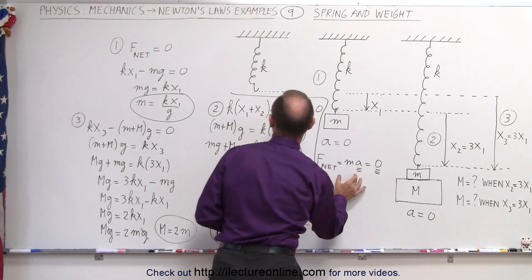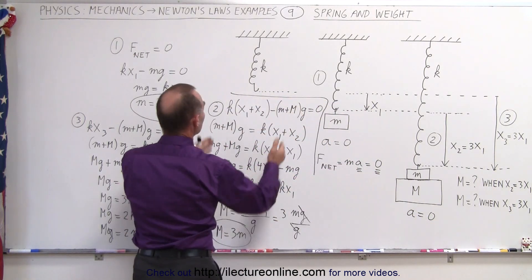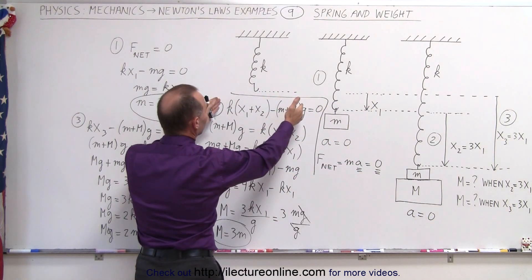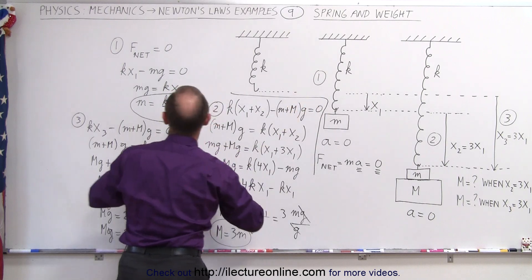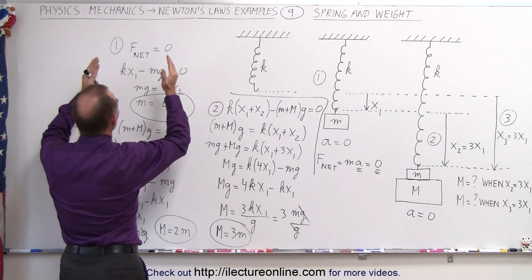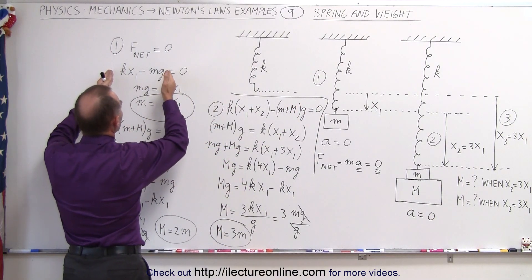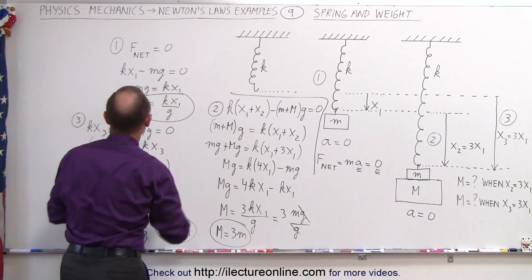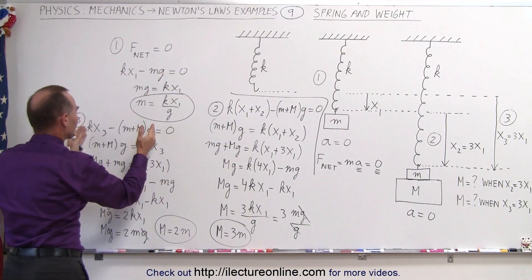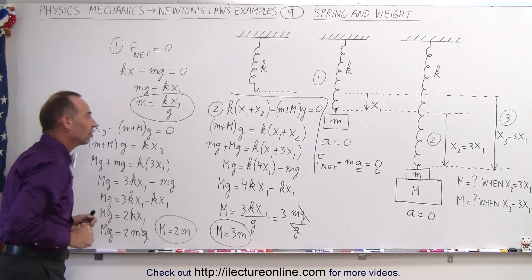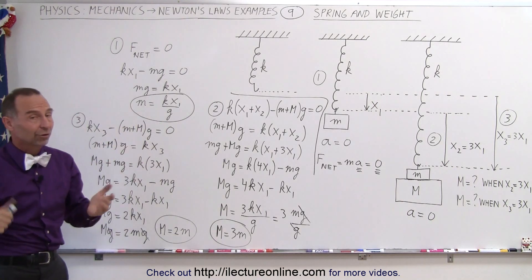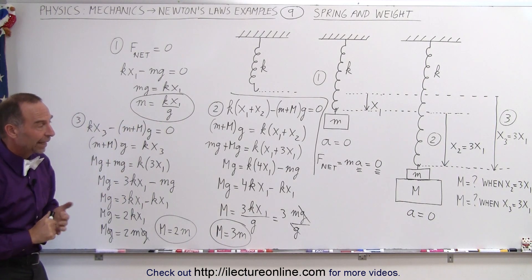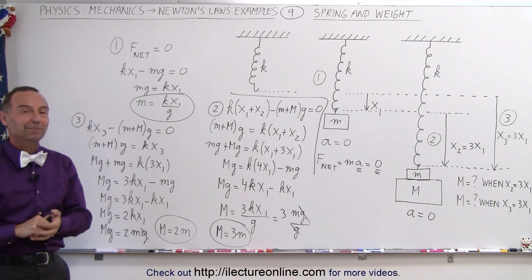That means the net force must equal zero. Net force equals zero simply means you add up all the forces acting on the object and set them equal to zero. Again, all the forces acting on the object, set equal to zero. And you solve for what you're looking for. That's how it's done.